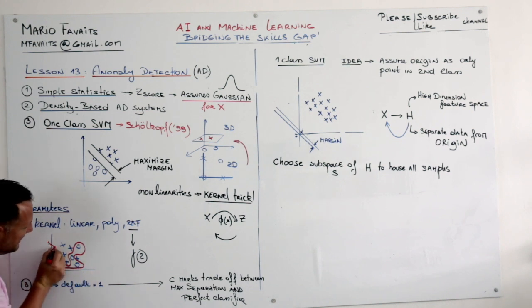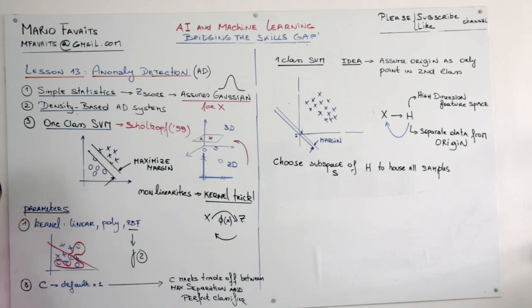When gamma is low you basically have a more decisive boundary, not turning every corner.